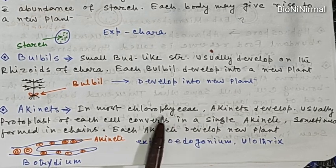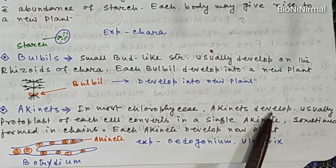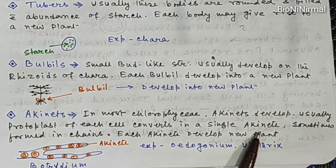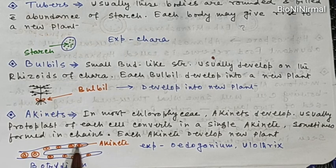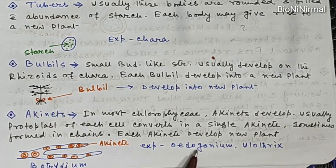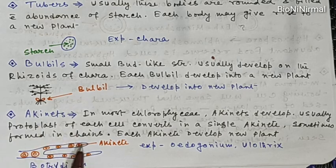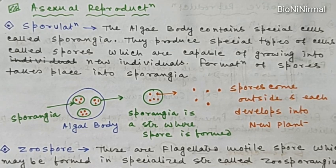Next is akinetes, which is very important. In most Chlorophyceae — the green algae containing chlorophyll — the protoplast of each cell converts into a single akinete, and sometimes these are found in chains. Each akinete develops into a new plant. Examples: Oedogonium and Ulothrix, which show vegetative reproduction by formation of akinetes.